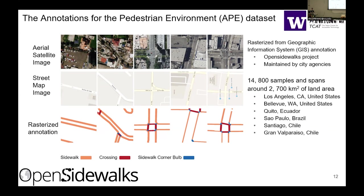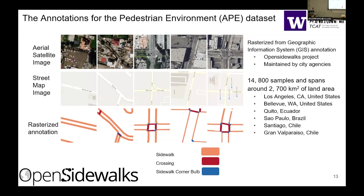The data collected in this dataset covers selected regions in cities including Los Angeles, California; Bellevue, Washington; Quito, Ecuador; Sao Paulo, Brazil; Santiago, Chile; and Brahma, Puerto Rico — consisting of about 4,800 samples and around 2,700 kilometers of land area. The classes included in this dataset are sidewalks (shown in brown), crossings (shown in red), and sidewalk curb ramps (shown in blue). These are the three most important classes to understand and describe a pedestrian path network.